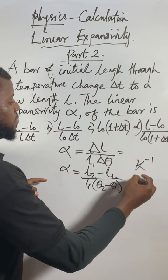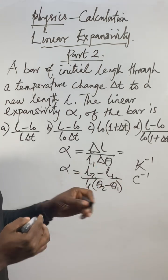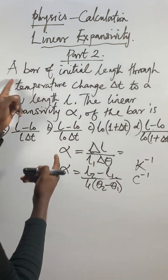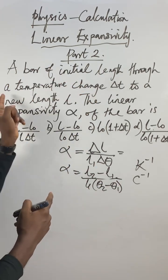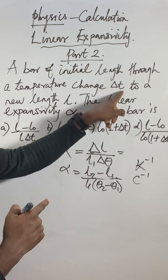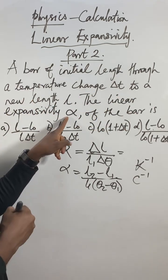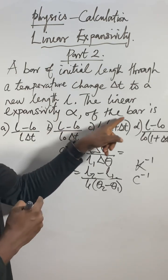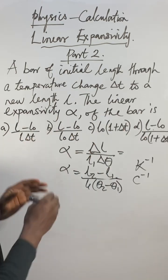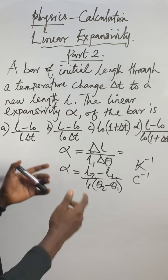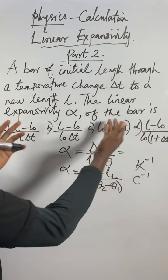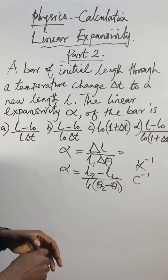Now this question says: A bar of initial length through a temperature change delta T to a new length L. The linear expansivity - you see the symbol here - of the bar is given. They present options before you. Which one is correct among them? What is the formula for linear expansivity?